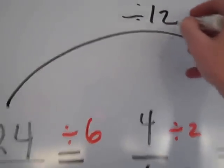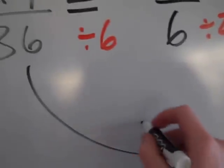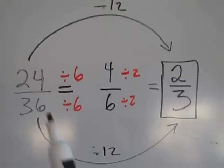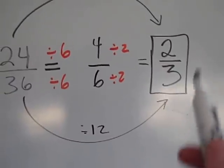Now I could have divided by 12. I'll do that real big. I could have divided by 12. 24 divided by 12 is 2, and 36 divided by 12 is 3. But instead I did 6 and then 2. It doesn't matter as long as you get to the simplest form, 2/3.